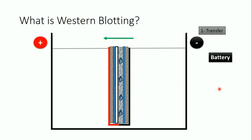Since the proteins are negatively charged, they will migrate from the negative toward the positive charge — that is, from the gel toward the membrane. Once the proteins reach the membrane, they bind on its surface. If I apply the right voltage for the right time, the proteins will end up on the membrane. Too much voltage or time and the proteins will end up in the filter paper, sponges, or buffer; too little and they'll remain in the gel.